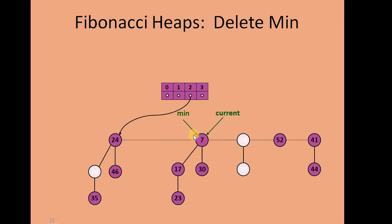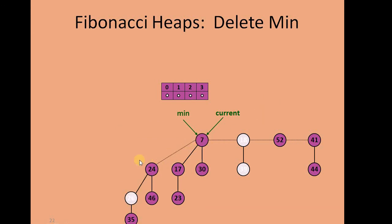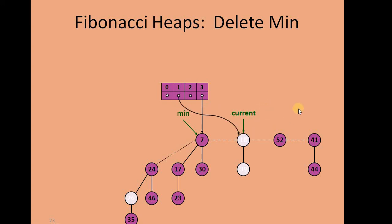Now the current node is also the min pointer and has height 2. We already have a tree with height 2 in the buffer, so we merge those two trees by comparing their root nodes — node 7 is smaller, so the other tree becomes its left child. This becomes the new minimum and current node. We connect this resulting tree to buffer position 3. Moving ahead, the next current node has height 1, so we connect it to buffer position 1. The next current node has height 0, connected to buffer position 0.